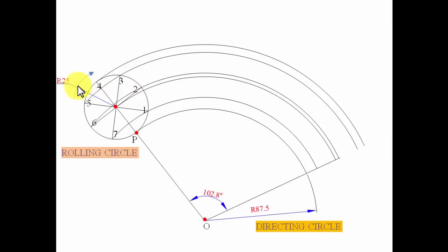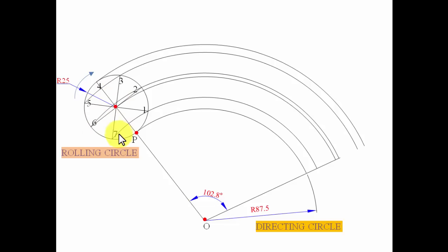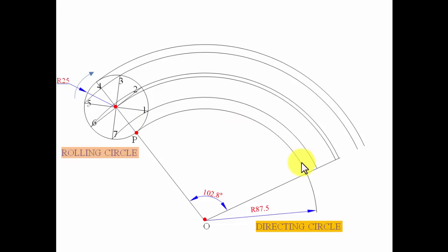If the rolling circle rolls clockwise, the contact point on its circumference successively touches the directing circle surface. Point one comes into contact first, then two, three, four, five, six, seven, and finally point B. This means the arc of the directing circle sector gets divided into eight equal parts, which is exactly what we construct next.